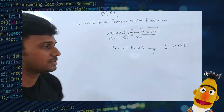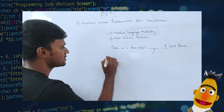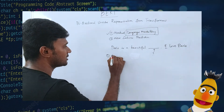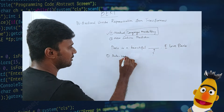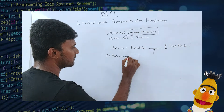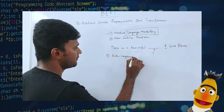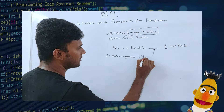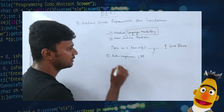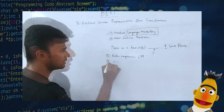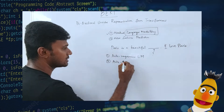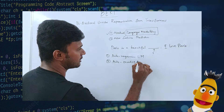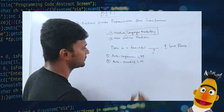Language modeling can be classified into two types. The first type is called auto-regressive language modeling, and the second one is called auto-encoding language modeling.